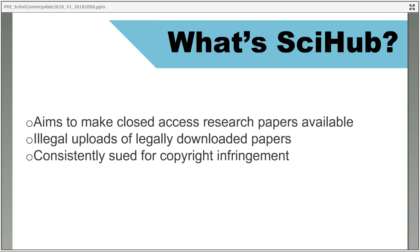Whilst the goal might be noble, I have to stress that Sci-Hub is illegal. The model involves researchers legally downloading articles through their university subscription and then illegally re-uploading them to Sci-Hub onto a central server. So someone from Cambridge might download an article they're entitled to access, then re-upload it to share with the wider community — that's where the illegal part happens. The site has been shut down numerous times but has underground support and moves to new servers. Sci-Hub has been sued twice in the last three years for copyright infringement, losing once to Elsevier for $15 million and once to the Royal Society of Chemistry for $4.8 million — money it hasn't paid as far as I know. The advice is simply: avoid this site.